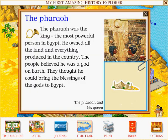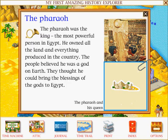The pharaoh was the king, the most powerful person in Egypt. He owned all the land and everything produced in the country. The people believed he was a god on earth. They thought he could bring the blessings of the gods to Egypt.